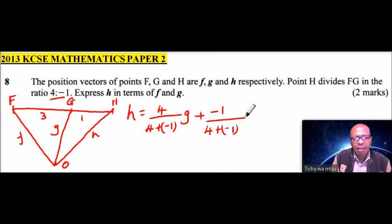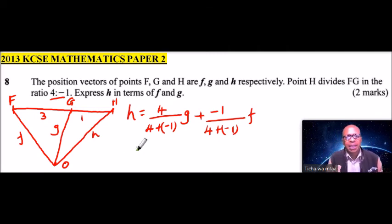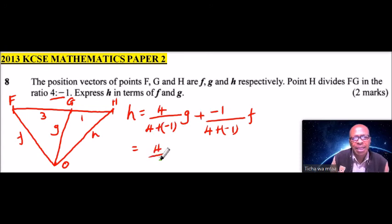and here we put the vector F. Because we take the opposite vectors here, you can check that in the topic of vectors, that is the part where we have the ratio theorem. So this will give us, when you add, this will be 4, divide by 4 plus minus 1 is 3, and this will give us our vector,